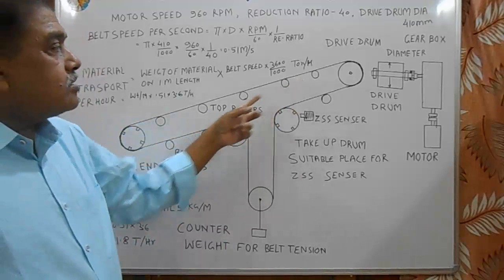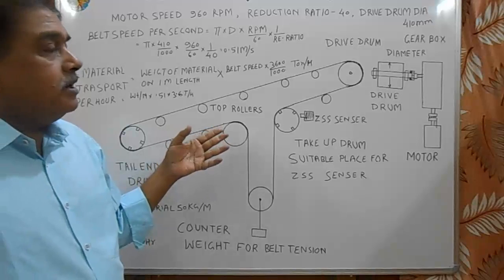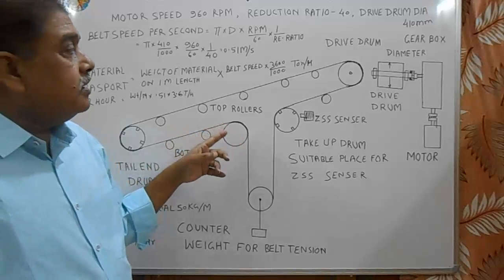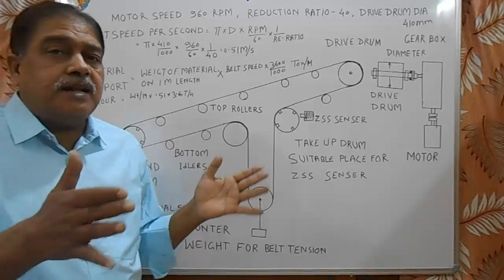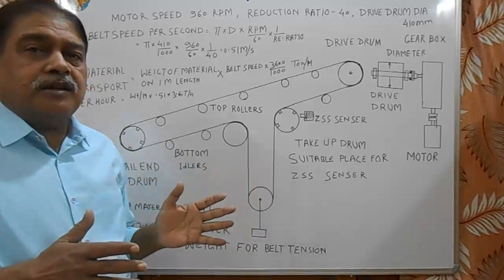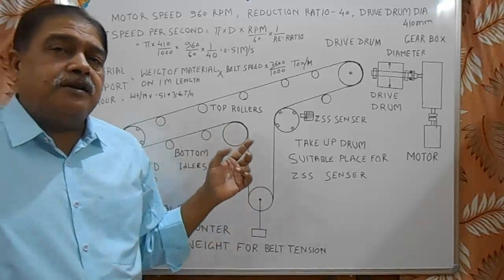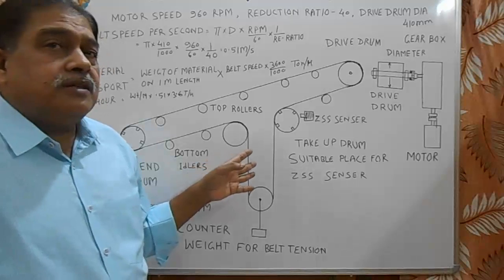Here a number of pull cord switches are provided so that operator can stop the belt from any pull cord switch. In addition to that, belt sway switches are provided on both sides of the belt conveyor. So if belt sways to any side of the center, then the belt switch operates and belt stops. This way stops the spillage of material.